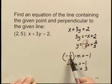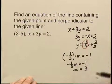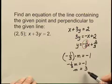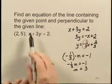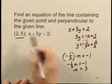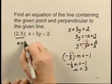Since negative 1 third times 3 is negative 1, any line perpendicular to this line will have a slope of 3. And that's what we're looking for. So the equation of the line containing this point and perpendicular to this line will have a slope of 3.